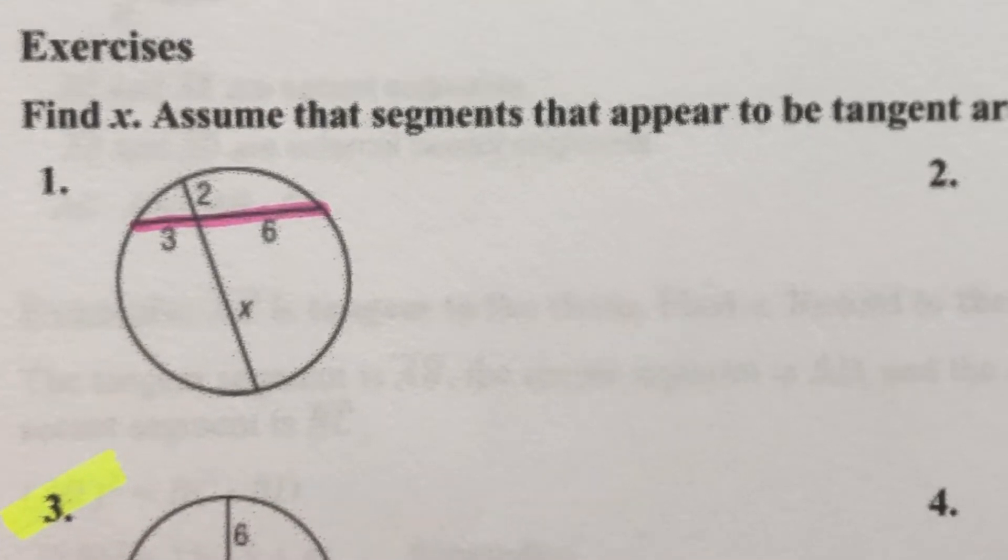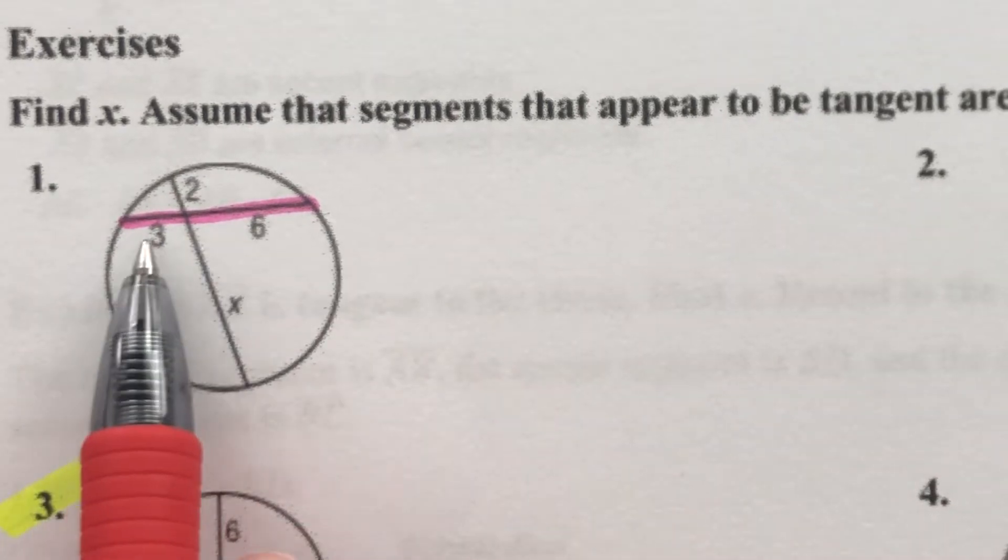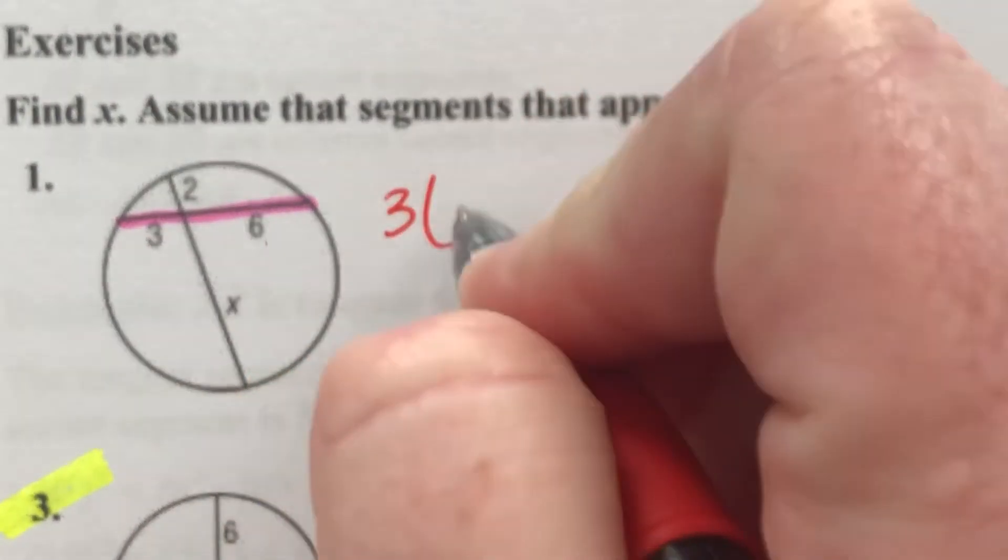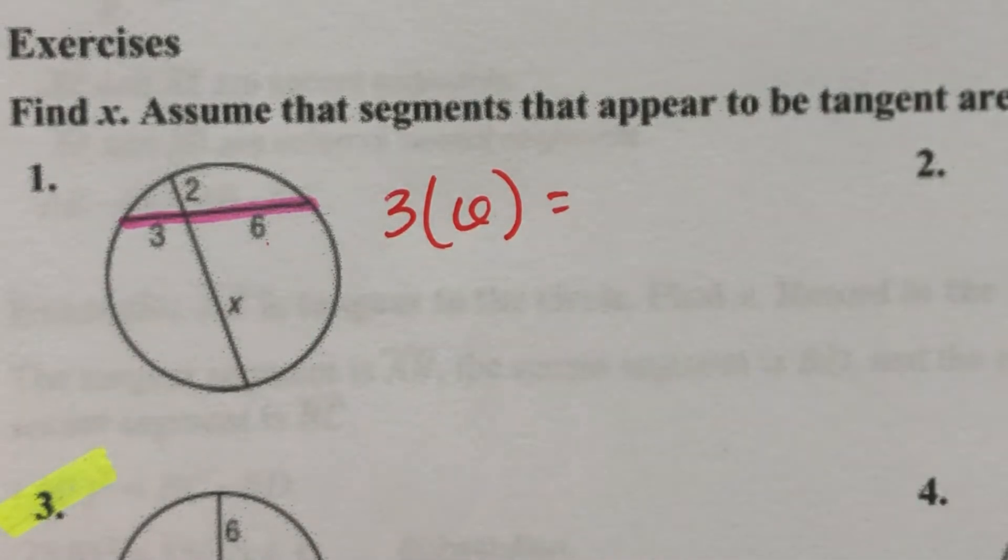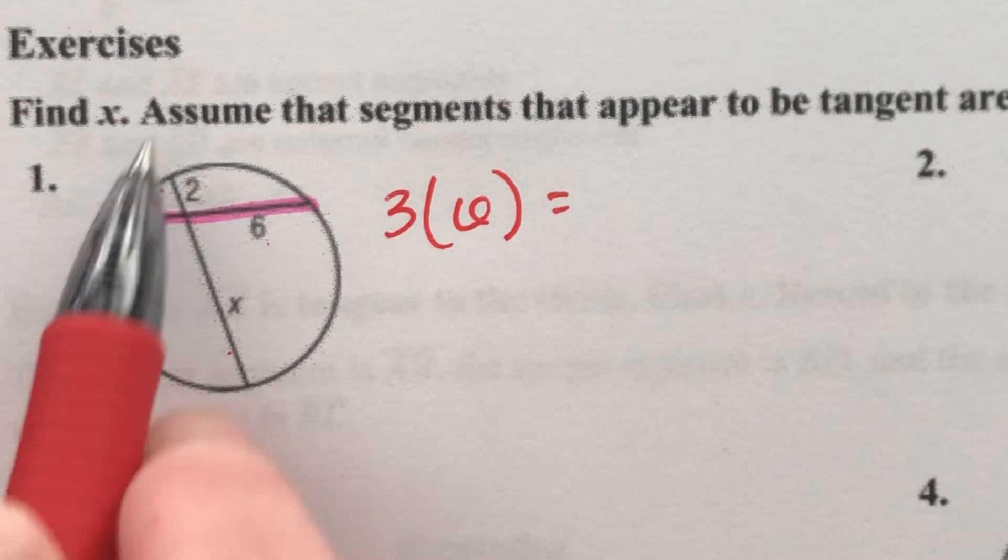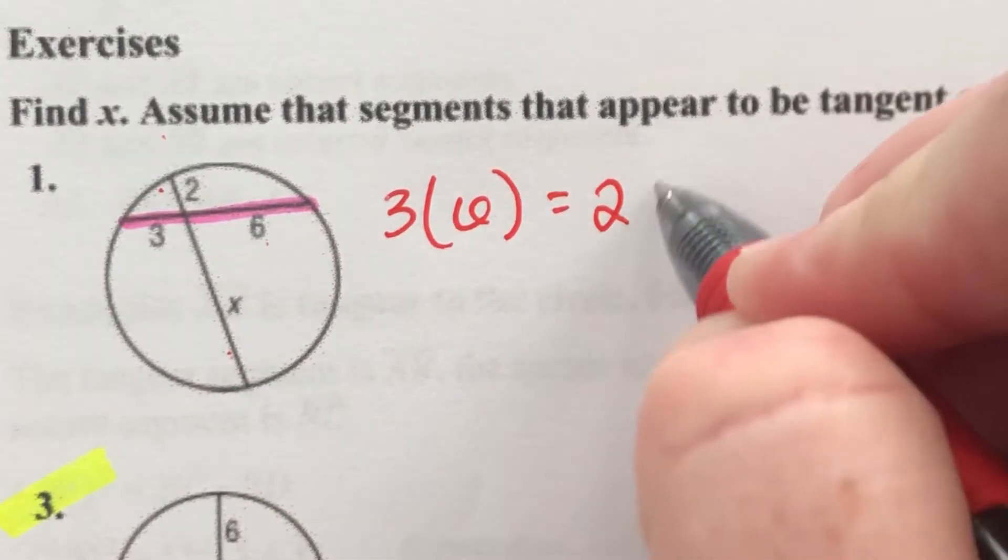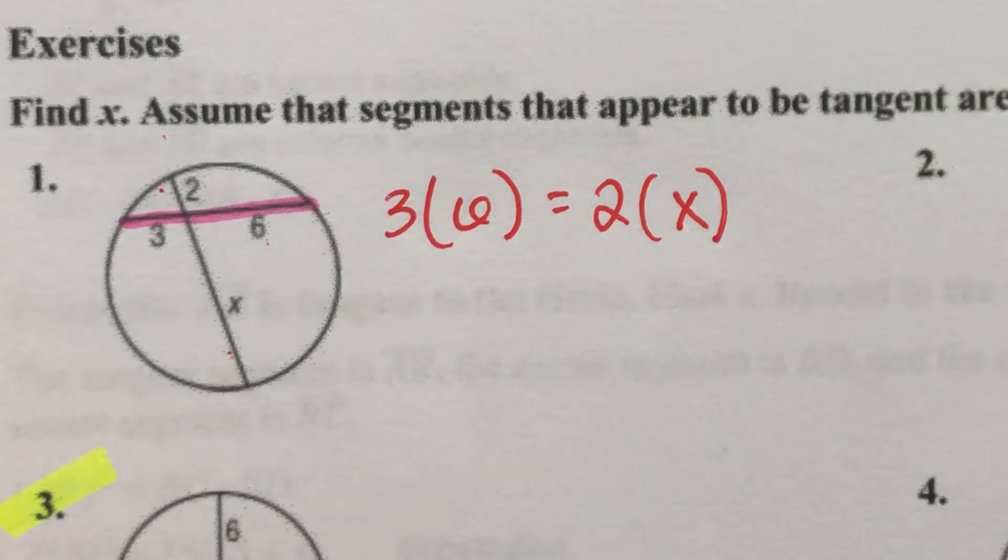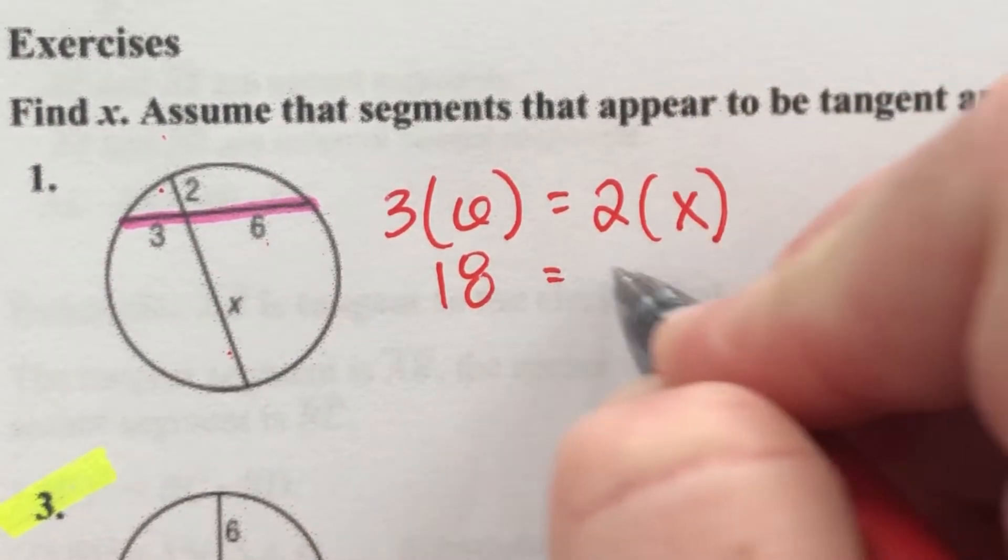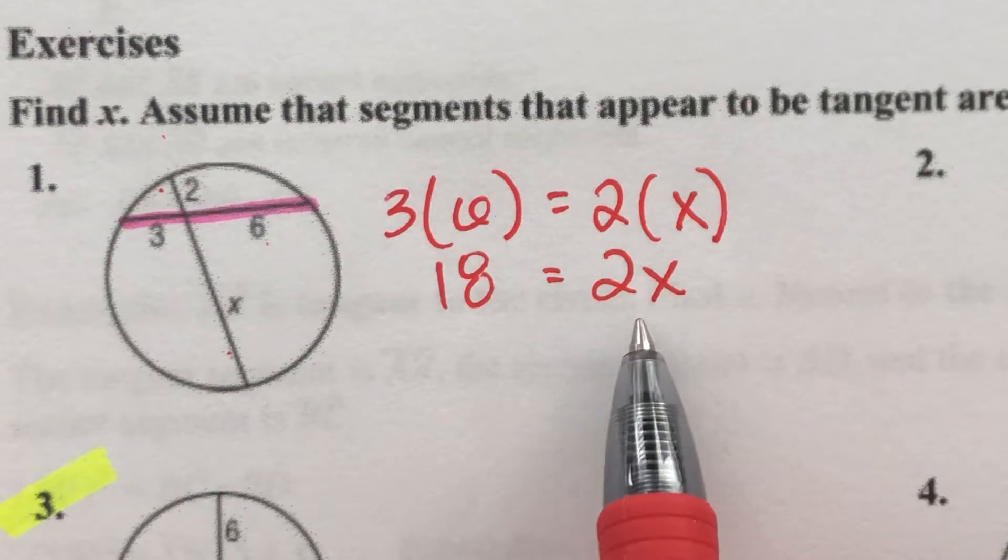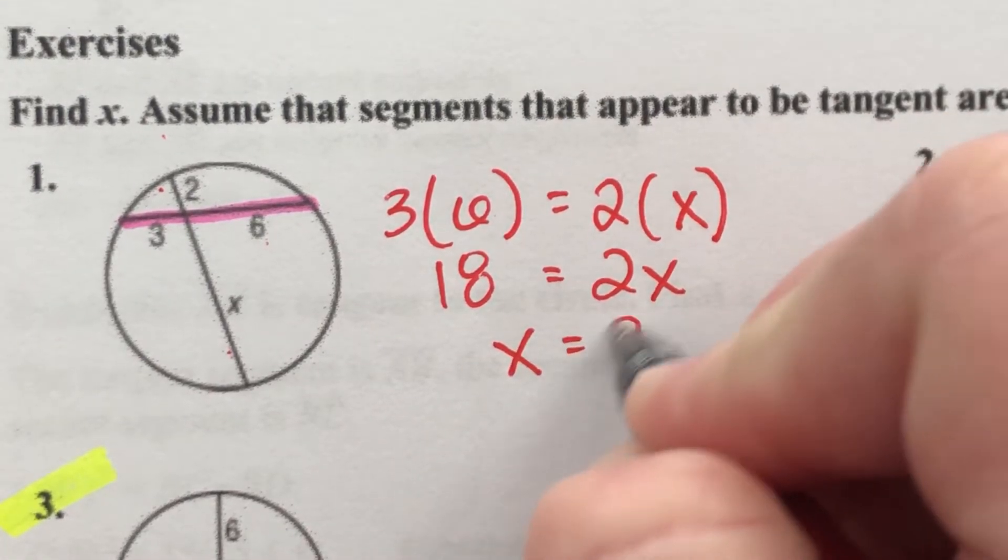I recorded this once and I didn't realize you couldn't see me over here on this side, so going back. Rookie mistake. All right, so when I multiply three times six, that should be equal to two times X, these two segments, and I'm solving for X. So I get 18 equals 2X. Divide both sides by two and nine equals X.